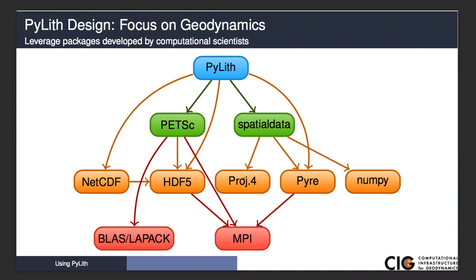There's also Pyre, which is how we gather all the user input, the .cfg files. We depend on the popular Python NumPy package. PETSc uses HDF5. PyLith uses NetCDF for reading Cubit and Trellis files. NetCDF depends on HDF5, which depends on MPI. So down here in the red, we have very low-level things like BLAS, LAPACK for number crunching, MPI for parallel processing. We have a relatively complex hierarchy of dependencies.